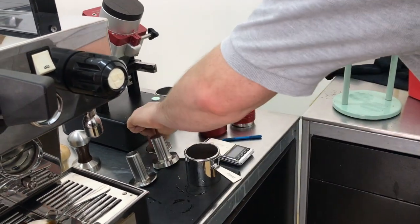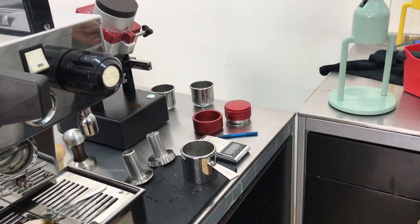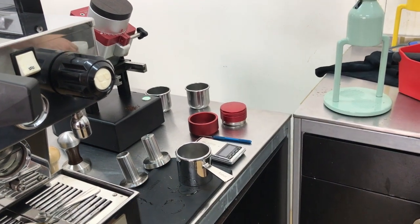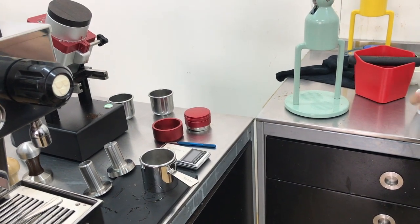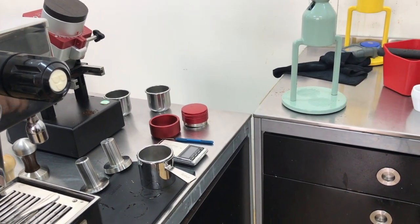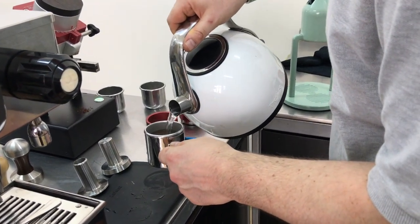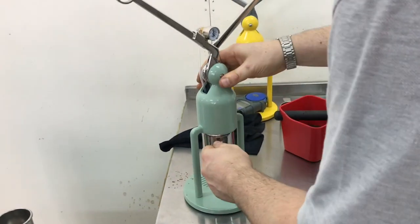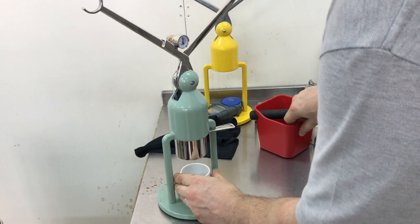Re-boil the kettle. Put our disc on. Oh, I didn't preheat the cup. Kettle boiled. Add the water. There we go.